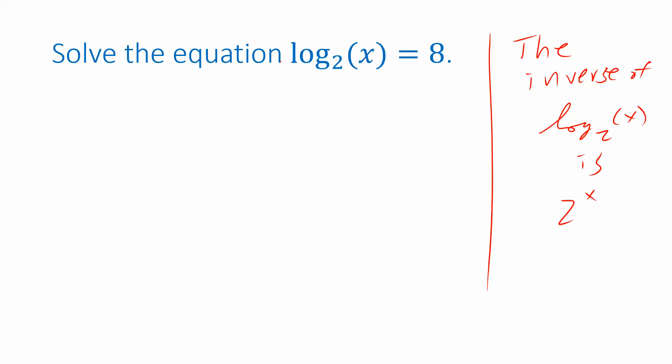I'll take this left side and make it the argument of the exponential function, the exponent in 2 to the x. So 2 to the log base 2 of x equals 2 to the 8. So on the left side, these exponential and logarithmic functions with the same base cancel each other out, giving us just x.